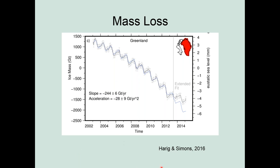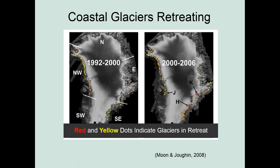At the same time we're losing all of this mass in Greenland, we're also seeing rapid changes taking place along the coast of the glaciers. This 2008 paper looks at a large number of outlet glaciers and identifies which glaciers are in retreat — meaning they're moving upstream, becoming shorter — and which are advancing. You can see a lot of red and yellow dots; each is the terminus of a glacier where the ice sheet flows into the ocean. So we're losing a lot of mass and we have a lot of glaciers retreating.